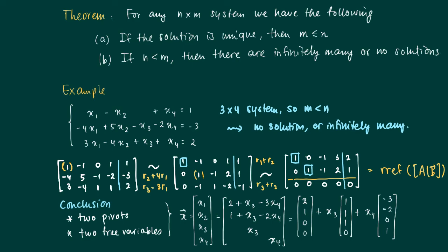We can write our complete solution to this system using a fixed vector called the support vector and two direction vectors. In this way, we end up with infinitely many solutions; for each value of x₃ and x₄, we have a different solution.